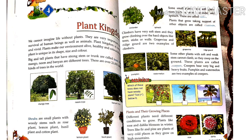Big and tall plants that have a strong stem or trunk are called trees. There are over 23,000 different kinds of trees in the whole world.